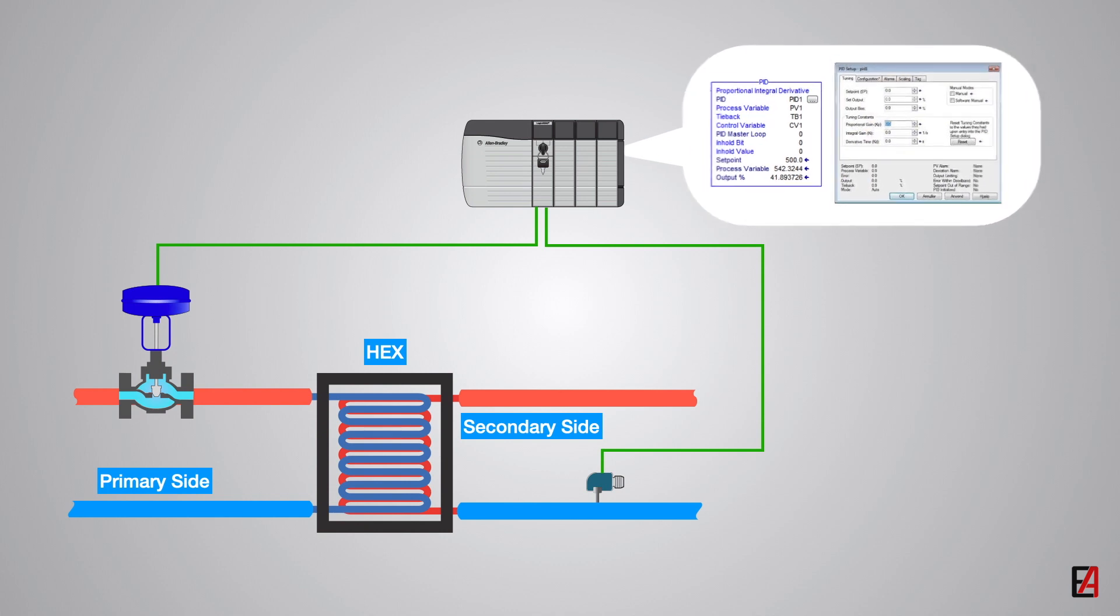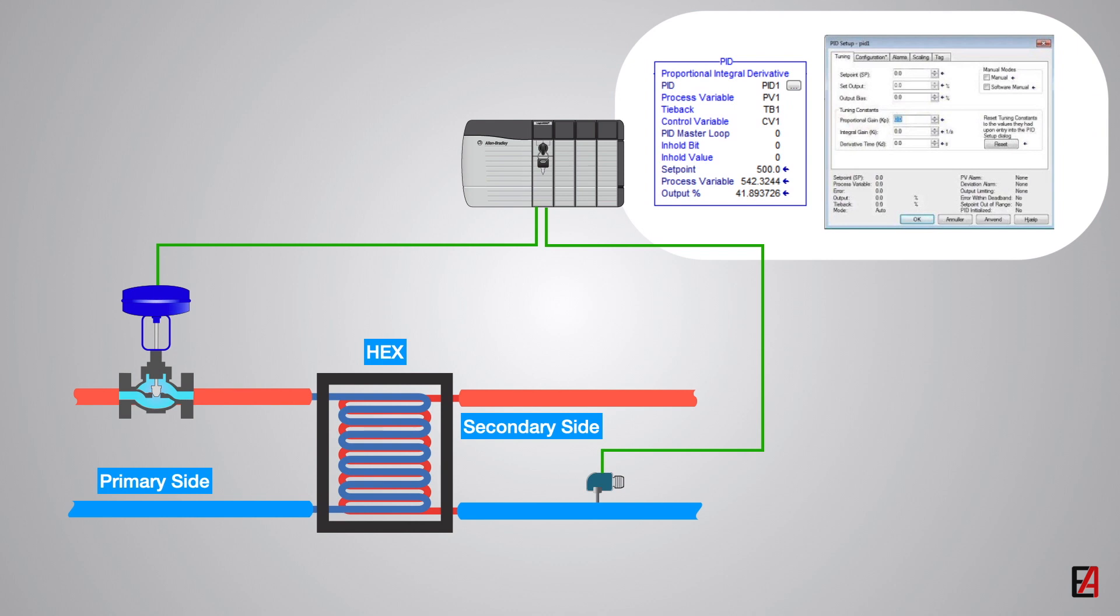To achieve a highly stable and fast responsive control, the Kp, Ki, and Kd values must be selected carefully by the controls engineer.